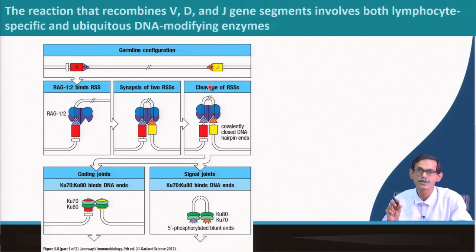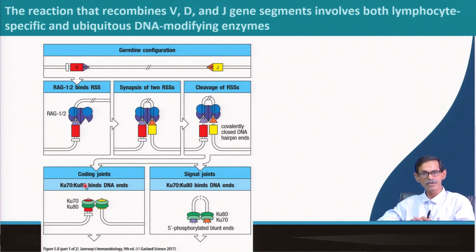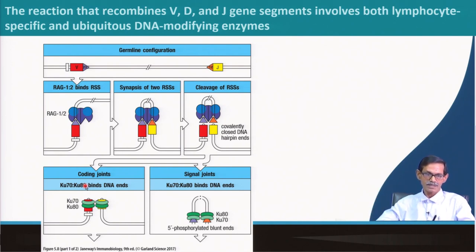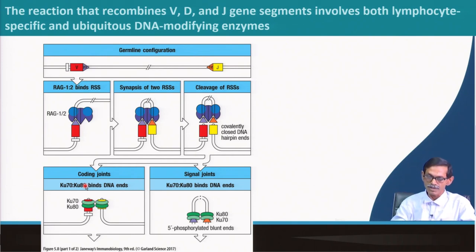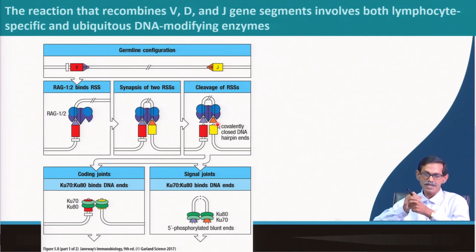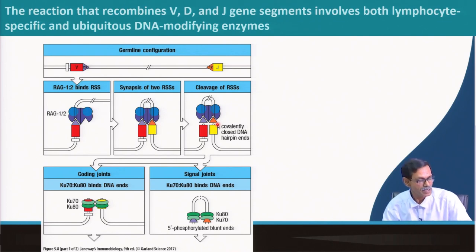The loop goes out. Then KU70 and KU80 come in. KU is a heterodimer of KU70 and KU80, and it makes a ring-like structure over the single-stranded DNA at both regions — the top part and the bottom part. This helps DNA recombination and brings in a DNA-dependent protein kinase, another protein we will see shortly.